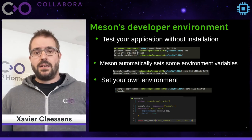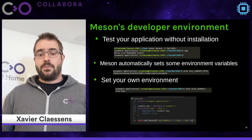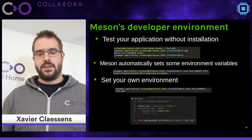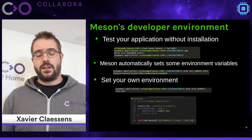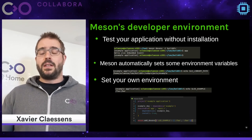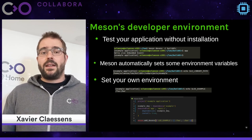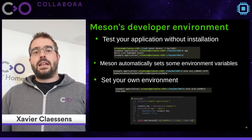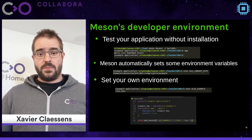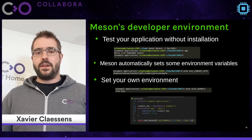Most importantly, you can extend the developer environment directly from your meson.build file to define your own environment variables. Your project likely needs to find data files that are usually installed on the system, but during development you want to use them in place from the source or build tree. You can define any environment variable in your meson.build using meson.add_devenv(), giving it a list of paths. Meson joins those paths in a platform-specific way — with a colon on Unix and a semicolon on Windows.